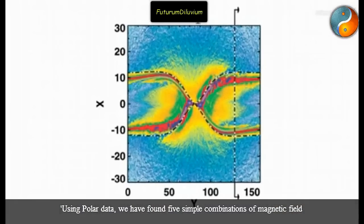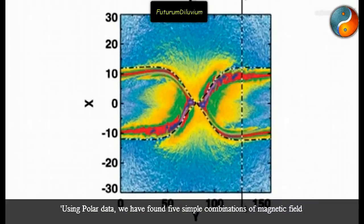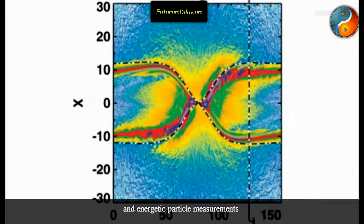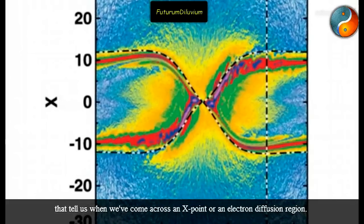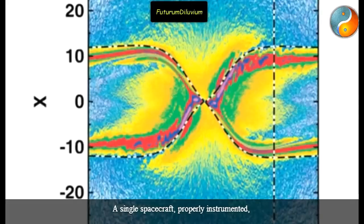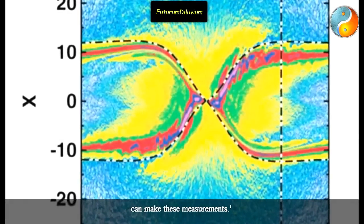Using Polar data, we have found five simple combinations of magnetic field and energetic particle measurements that tell us when we've come across an X-point or an electron diffusion region. A single spacecraft, properly instrumented, can make these measurements.